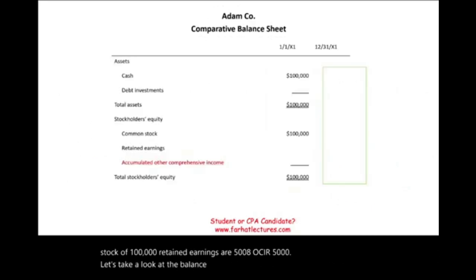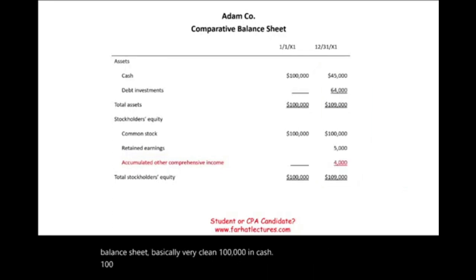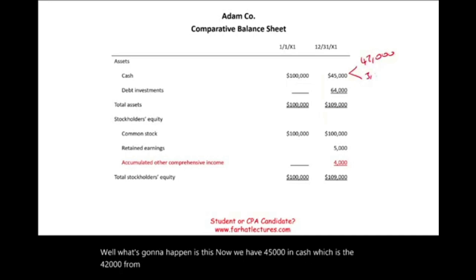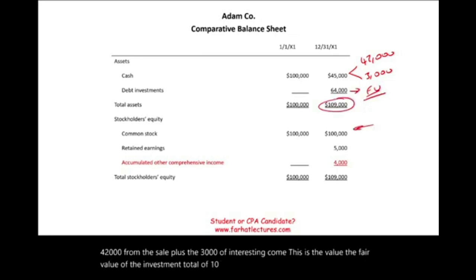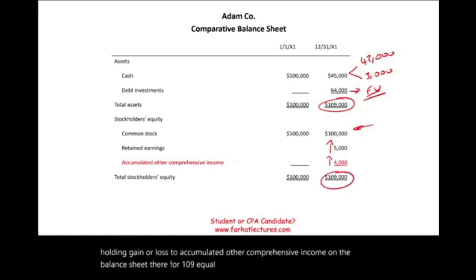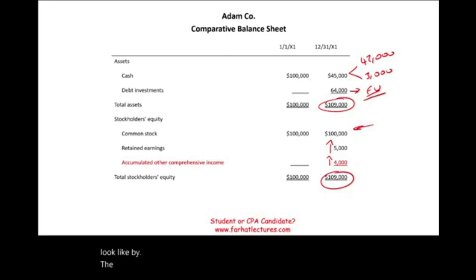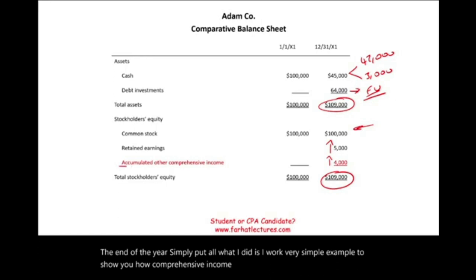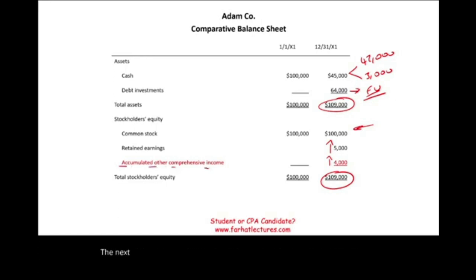The balance sheet shows cash of $45,000 (the $42,000 from the sale plus $3,000 interest received), plus the investment at fair value. Total assets equal $109,000. Common stock remains $100,000, retained earnings increased by $5,000 net income, and AOCI holds the $4,000 unrealized gain. Total equity equals $109,000, balancing the sheet. This completes the single-period example showing how comprehensive income closes to AOCI.